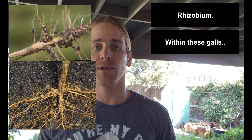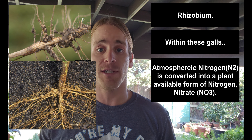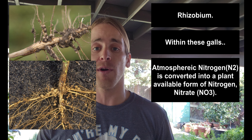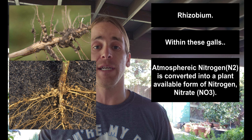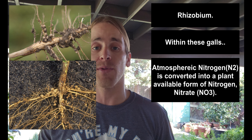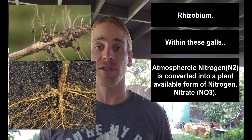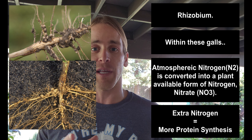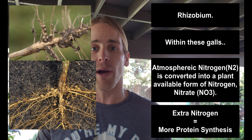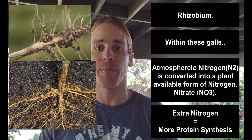They're able to take atmospheric nitrogen, N2, and convert it into a plant-available form, usually nitrate, NO3. And so the plant is then able to get extra nitrogen just for giving a little bit of carbohydrates and water to this bacteria.